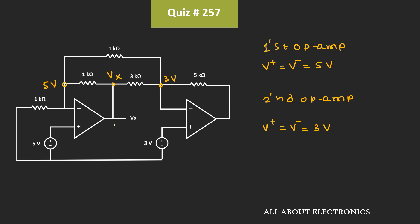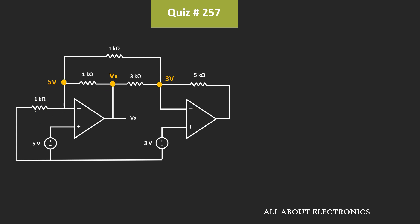Now, just by looking at the circuit, we might get tempted to apply the KCL at this node. But here, we don't know the current which is supplied by this op-amp. So instead of applying the KCL at this node, we can apply the KCL over here. So let's apply the KCL at this node and find the value of Vx.